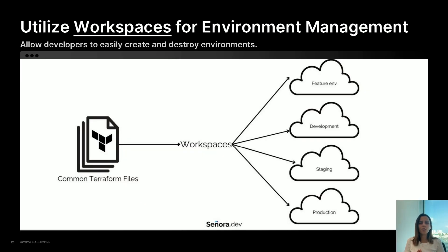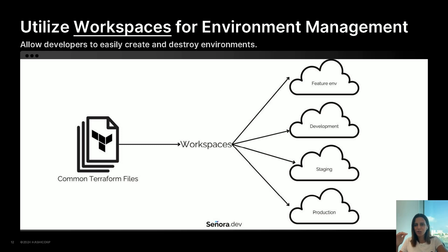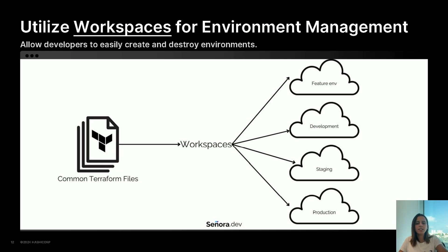Workspaces in Terraform provide an isolated environment for different stages of our infrastructure, such as development, testing, staging, and production. These isolations allow the developer to create, test, and destroy environments without affecting others. When infrastructure is written in a generic and modular way, it allows developers to create a new workspace based on the same code and use it as a personal or feature environment that can be removed when no longer needed — for example, triggered by pull request events — while ensuring stable environments are not affected by ongoing testing or development.